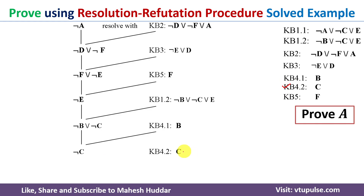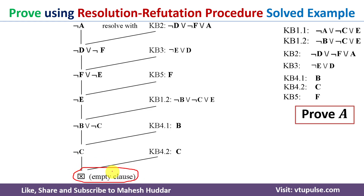Taking knowledge base 4.2, which contains C, this C and negation of C cancel, and what we have at the end is the empty clause. The empty clause means that what we assumed — negation of A — is wrong, and therefore A is true. We were able to prove this conclusion. This is how we use the resolution refutation procedure on the given knowledge bases to prove the given conclusion. First, convert the knowledge bases into clause form, then apply resolution to get the final answer.